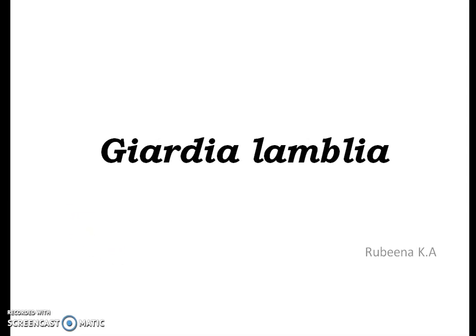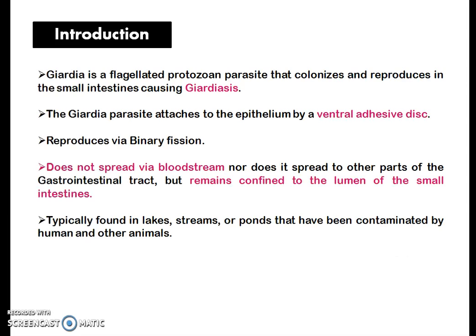Today we will be learning about the protozoan parasite Giardia lamblia. Giardia is a flagellated protozoan parasite that colonizes and reproduces in the small intestine, causing Giardiasis. It is a flagellated protozoan which colonizes and reproduces in the small intestine and it attaches to the intestinal epithelium.